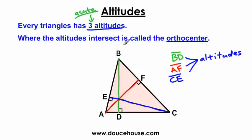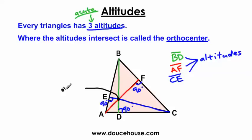There's something important you need to remember: all these line segments hit the opposite sides at 90 degrees. I want to emphasize that because I'm about to do a couple of example problems, and you need to understand that this angle measure is 90 degrees wherever the line segment hits the opposite side. Now there's something very special here as well. Notice how all these altitudes are intersecting at the same location. This is called an orthocenter — where all the altitudes intersect, it's called an orthocenter.